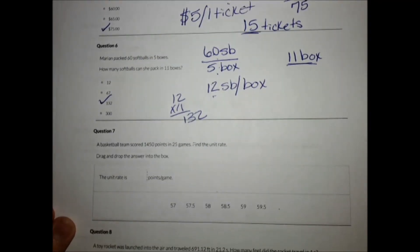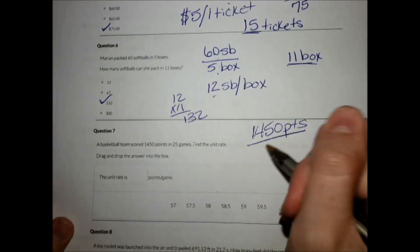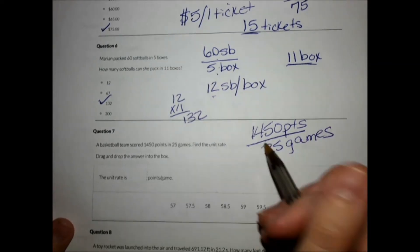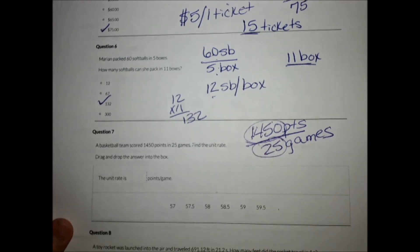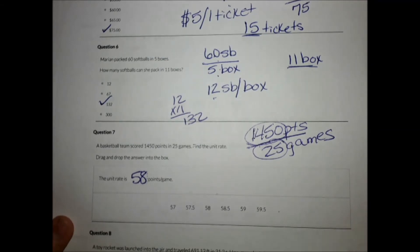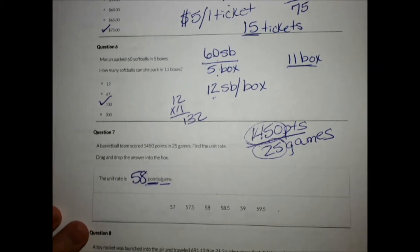Number seven. A basketball team scored 1450 points in 25 games. Find the unit rate. So all I'm going to do is divide 1450 by 25, and I get 58 points per game. If you ever forget what goes on top and what goes on bottom, look at your answer, what it's wanting. It wants points on top, games on bottom. It'll tell you what order that it wants those in.